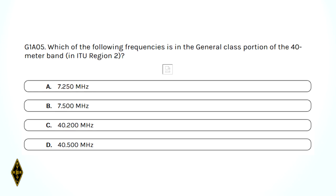On which of the following frequencies is in the general class portion of the 40-meter band in ITU Region 2? The 40-meter band is approximately 7 MHz, so you can drop two of those right out — C and D are 40 MHz, not in the 40-meter band. The top end of the 40-meter band is 7,300 kHz, so it couldn't be 7.5 MHz. By process of elimination, it's 7.25 MHz.